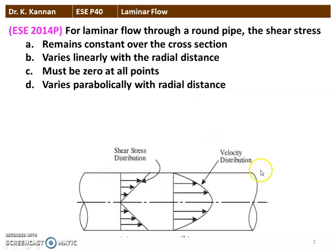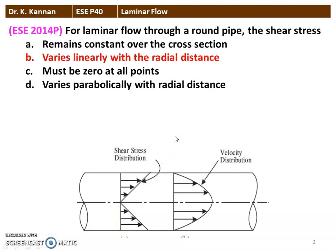For flow through a pipe, the velocity profile and the shear stress profile for fully developed flow in a circular pipe — the velocity profile is parabolic and the shear stress is linear. So for laminar flow, the shear stress varies linearly with the radial distance. At the center, the shear stress is zero and the shear stress is maximum on the wall of the pipeline.